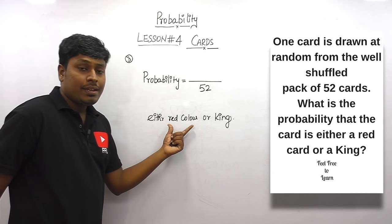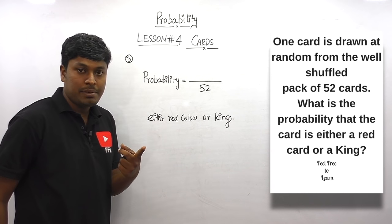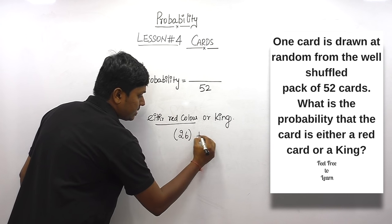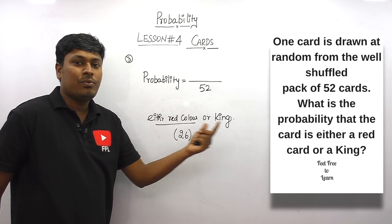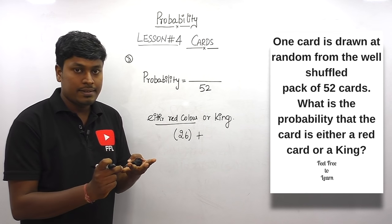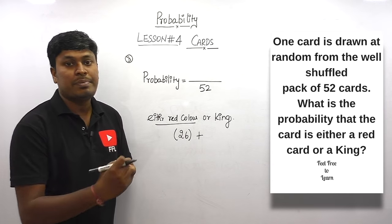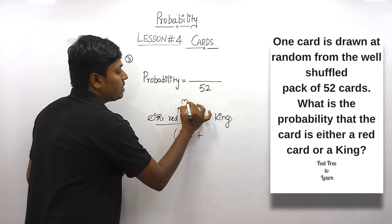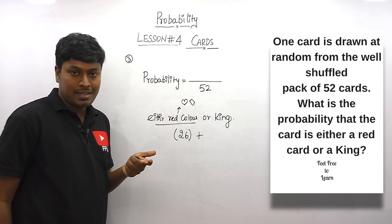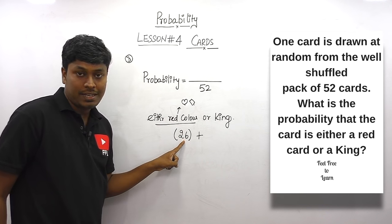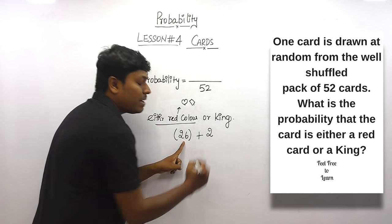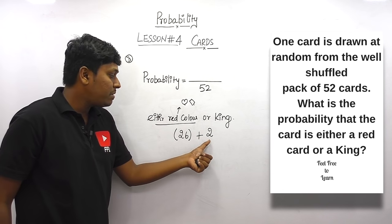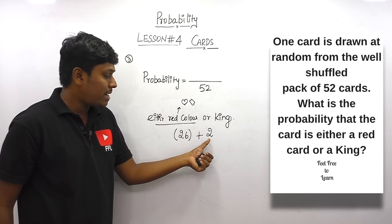There are 26 red color cards. For kings: we have totally four kings, but in the red cards we have already picked a king from diamond and one from heart. So the remaining kings are only two — from club and spade — which must not be double-counted. So the sum of observations is 26 plus 2.